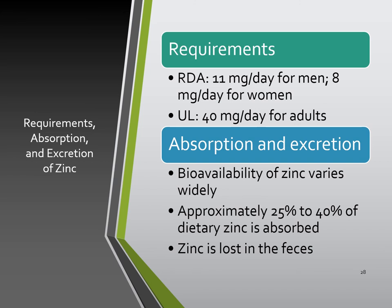The bioavailability of zinc is highly variable — approximately 25 to 40 percent of dietary zinc is absorbed. A primary deficiency is when the nutrient is absent from the diet, while a secondary deficiency is when zinc is available but not absorbed, which is typically what happens with zinc deficiency. It could be that zinc is being eaten with something that blocks its absorption. Zinc is lost in feces.